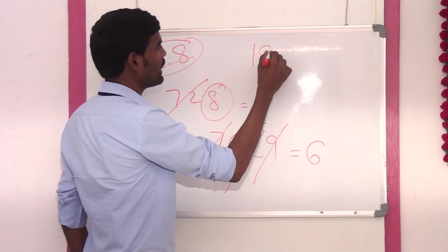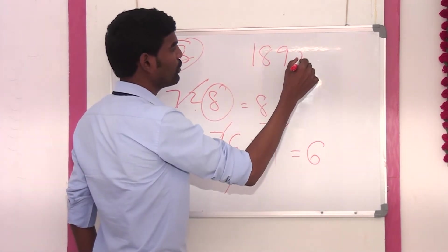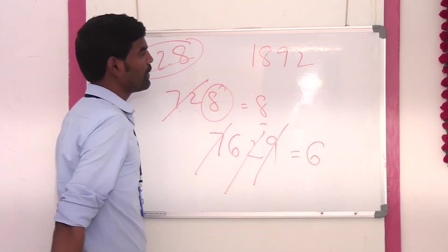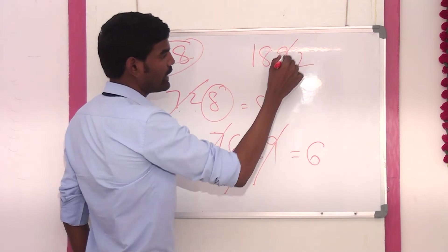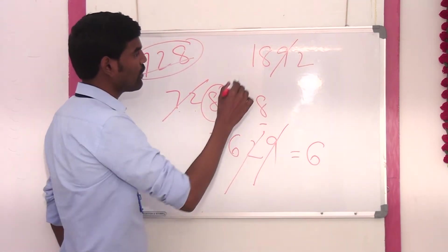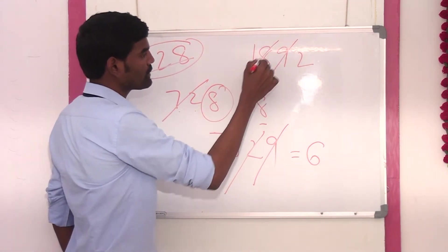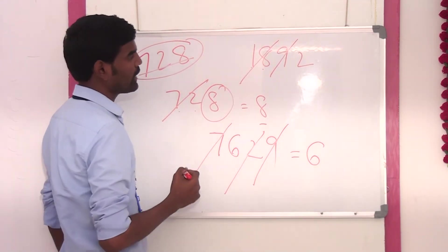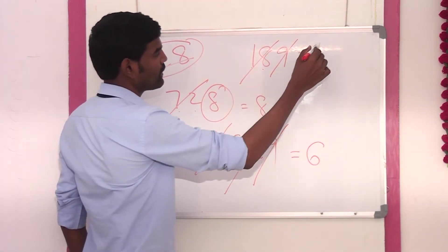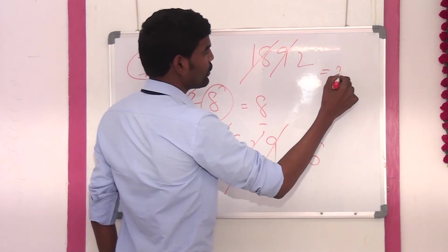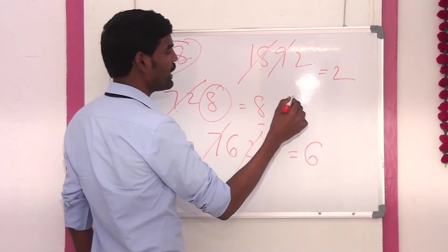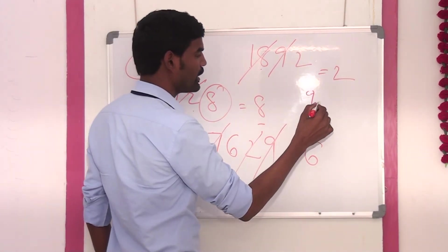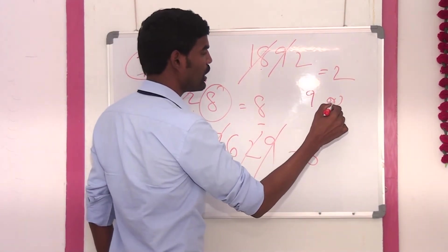For example, 1892. The digit sum of 1892: 9 is cancelled. 1 plus 8 is also 9 — we can cancel it. So the answer is 2. And here 9 can be written as 0 also.